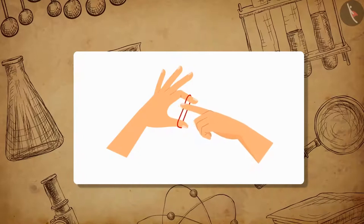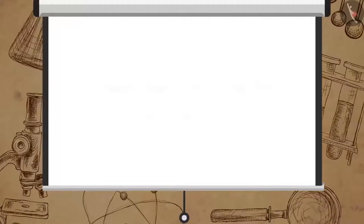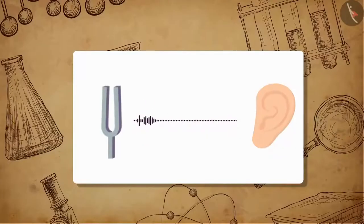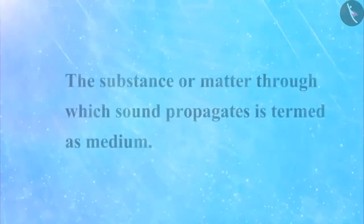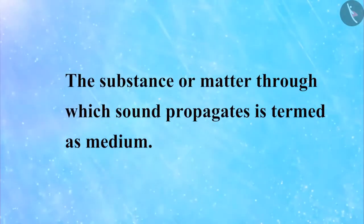Let us perform a simple activity to see how vibration produces sound. Take a rubber band and stretch it, then pluck the rubber band. You will notice that the band vibrates and produces a sound. But how does the sound reach your ears? Sound travels from the point of its origin to the receiving end, and to do so it needs a medium to travel.